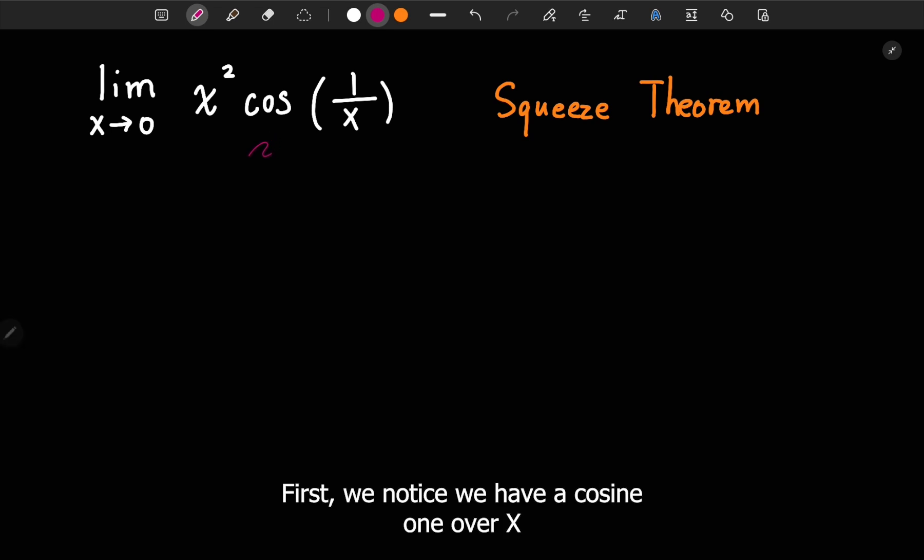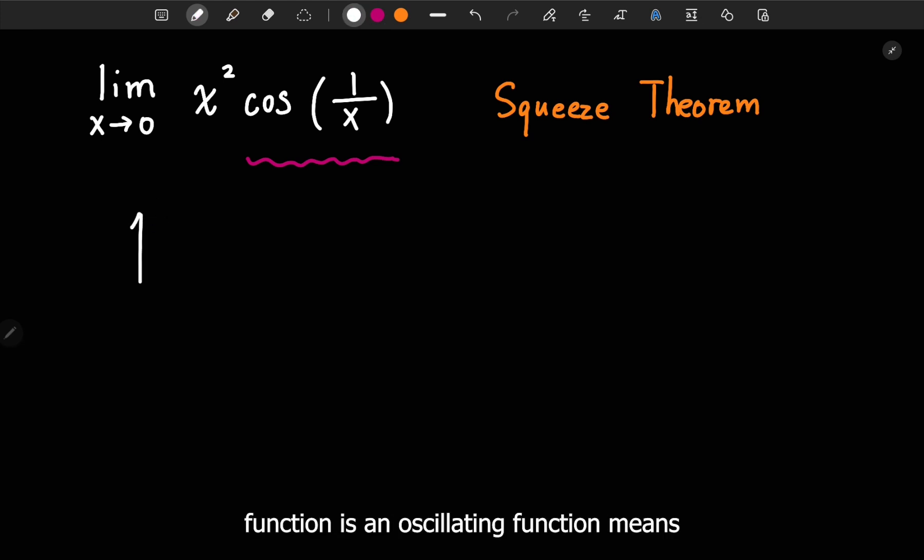First, we notice we have a cosine 1 over x. And we know our cosine function is an oscillating function, means it goes in between 1 and negative 1.